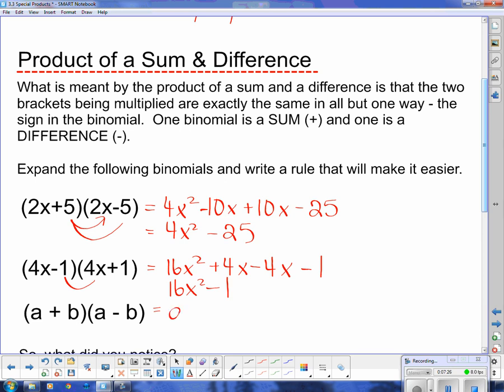a times a is a squared. Then I get a times negative b is negative ab. Then b times a is positive ab. It doesn't matter which way you write it. And then b times negative b is minus b squared. And now that I've done it in the general case, you can see more of what's happening here. We get a squared minus b squared.